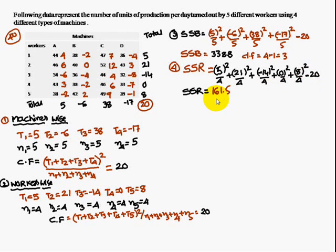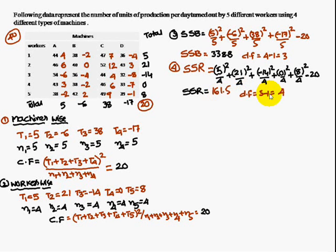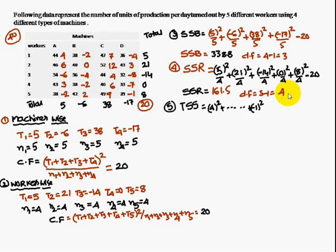The workers-wise SSR = 161.5. The degree of freedom for workers is the number of workers minus one: 5 minus 1 = 4.